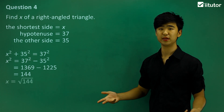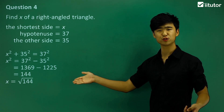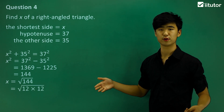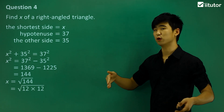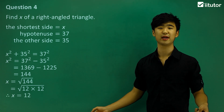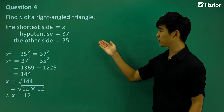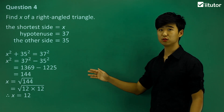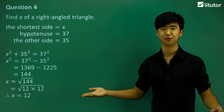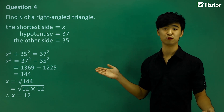So x must be the square root of 144. We can write 144 as 12 times 12, or the square root of 12 squared. We cancel out the square root sign and are left with x equals 12. Even though we weren't given a triangle diagram, just the sides, we can still apply the Pythagoras theorem because we were told it is a right-angled triangle.